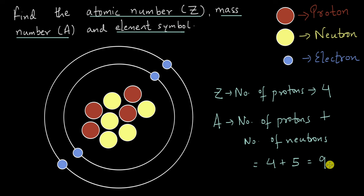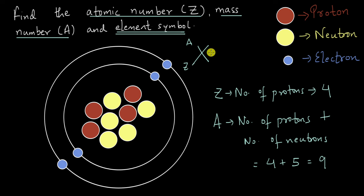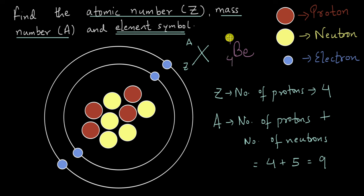So the mass number for this atom is 9 and the atomic number is 4. We also need to find the element symbol. To represent an element, we write the chemical symbol — let's call it X for now — with the mass number A on the upper left side and the atomic number Z on the lower left side. Here the atomic number is 4. If we look at our periodic table, the element with atomic number 4 is hydrogen, helium, lithium, beryllium. So X will be represented by Be — this is the chemical symbol for beryllium. So we have mass number A equals 9 and atomic number Z equals 4, giving us the element symbol for this atom.